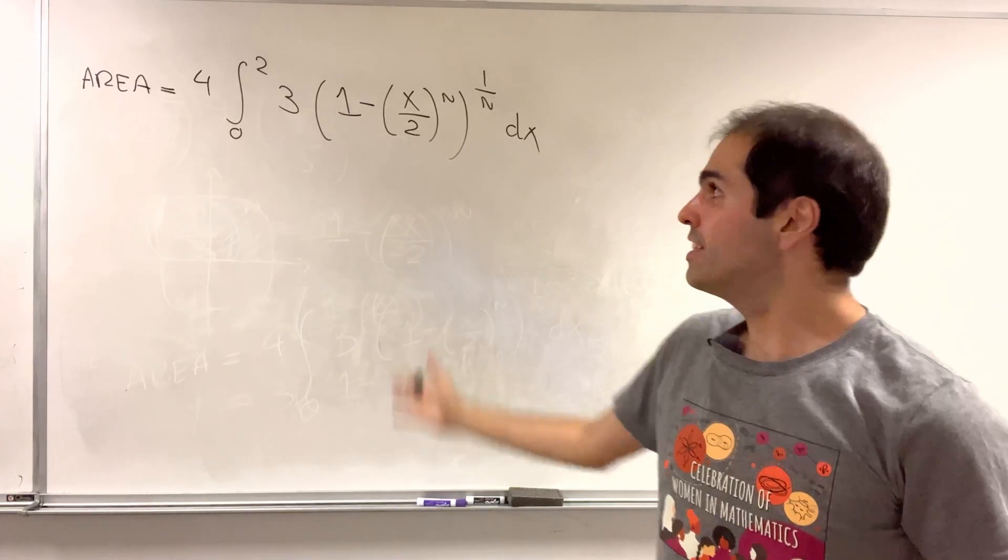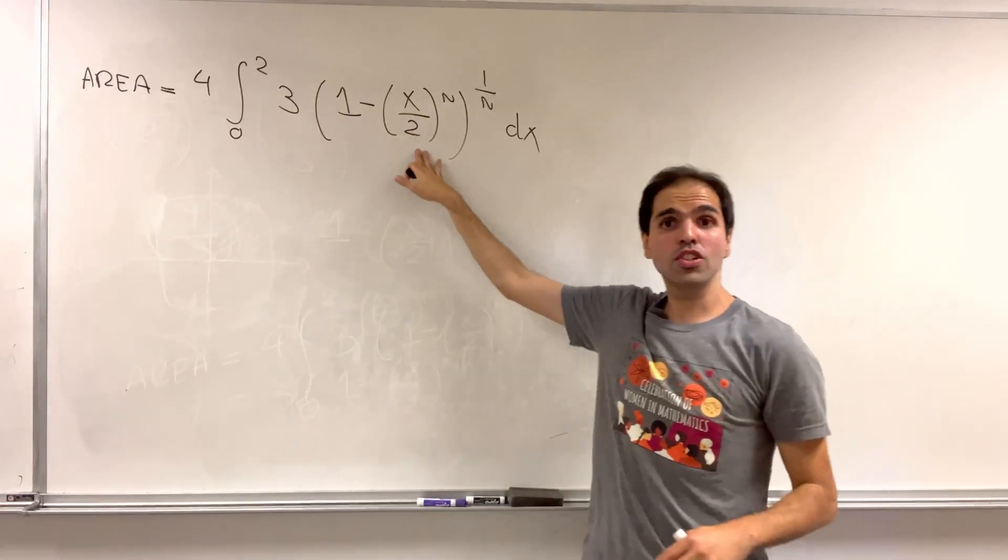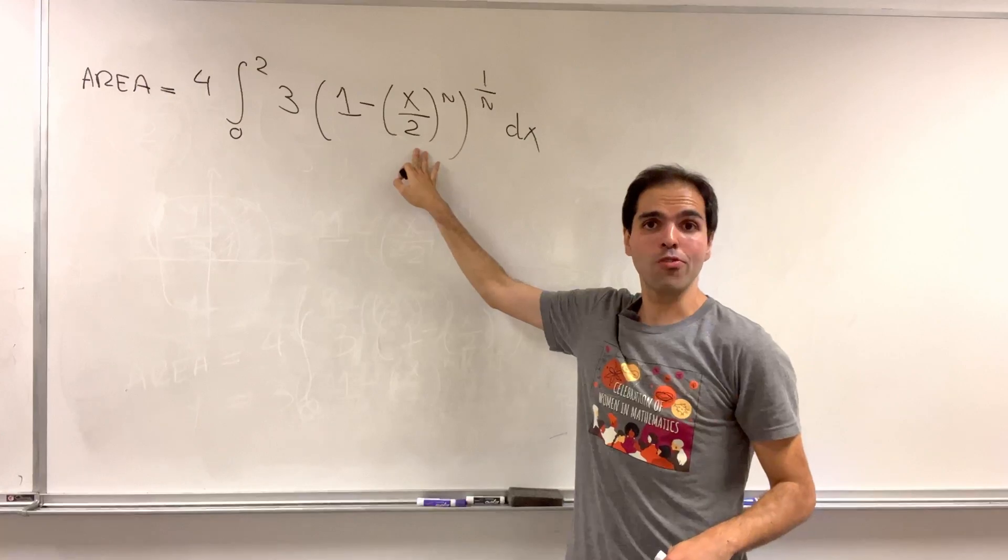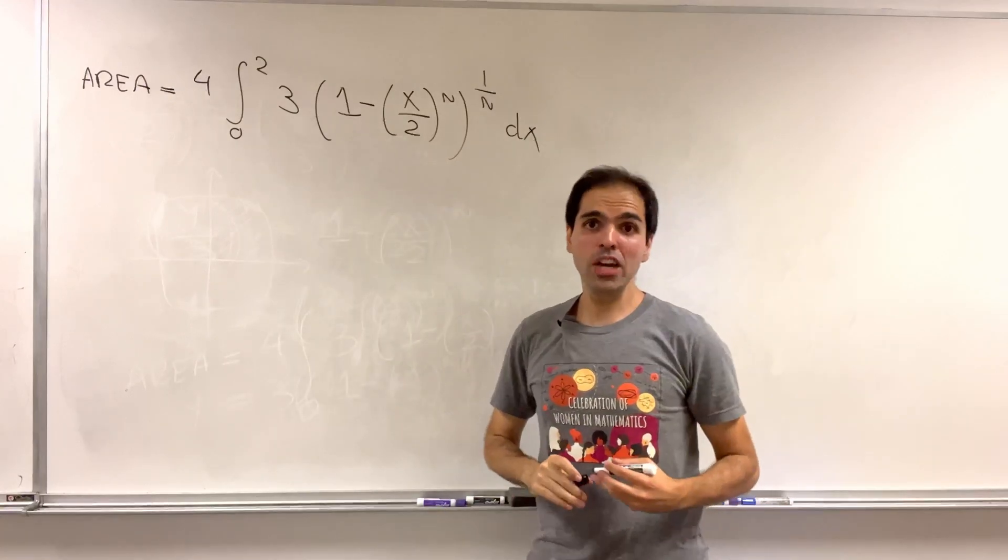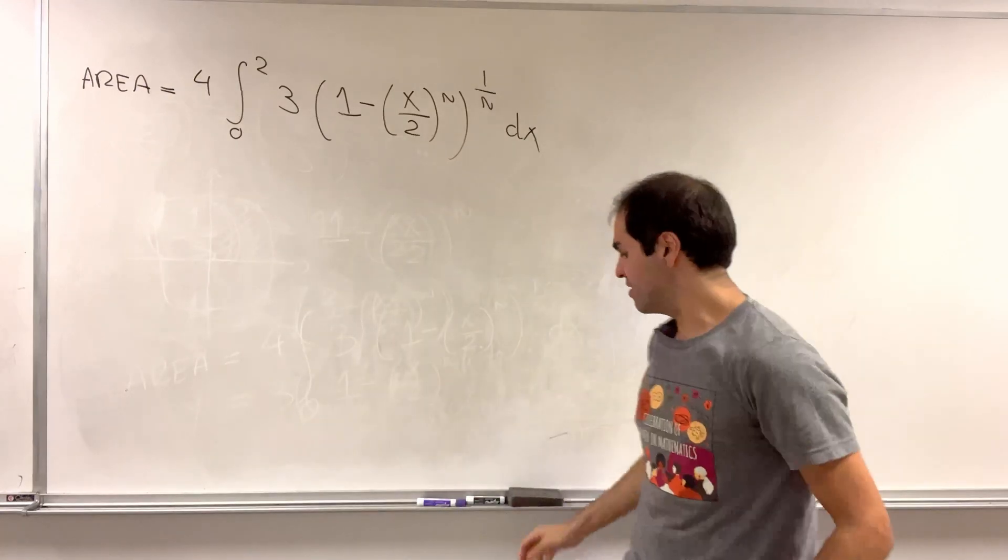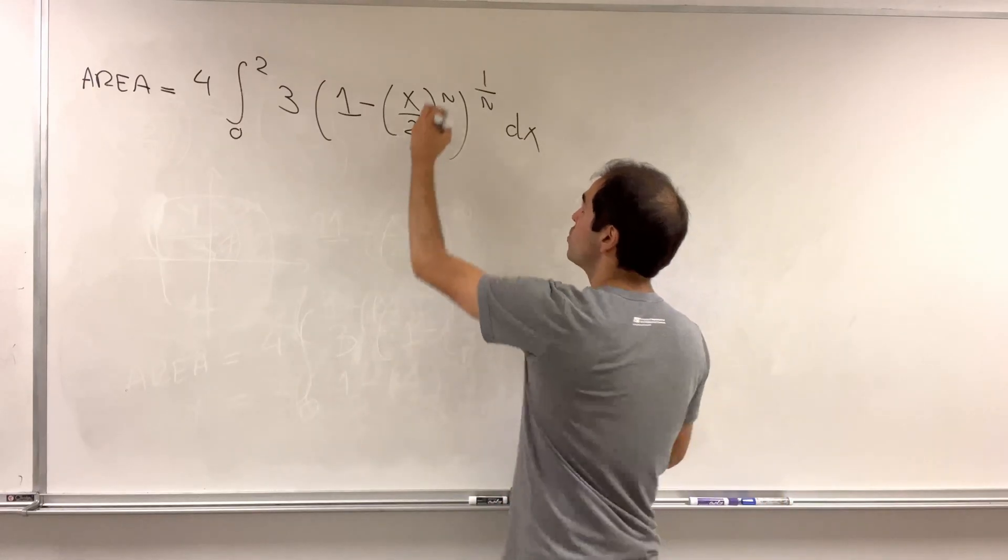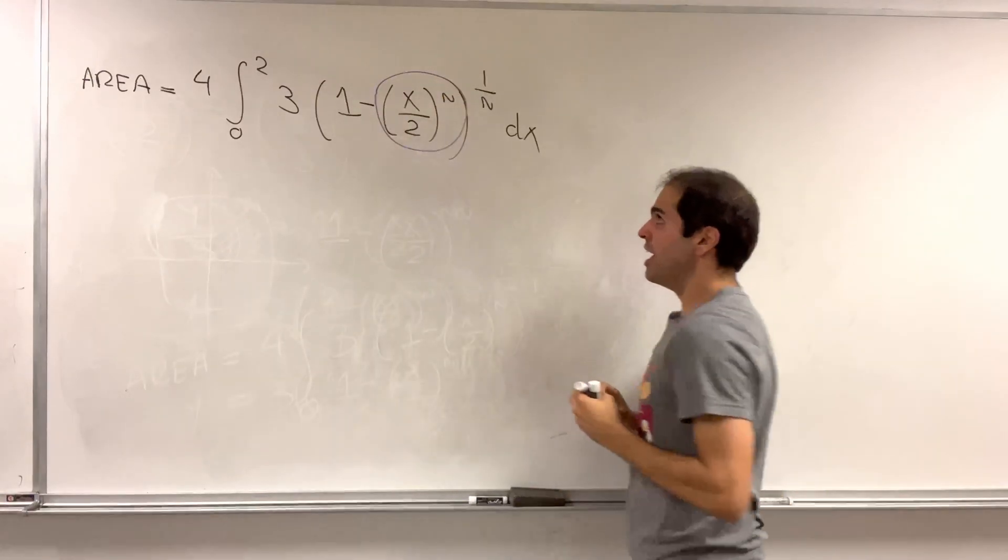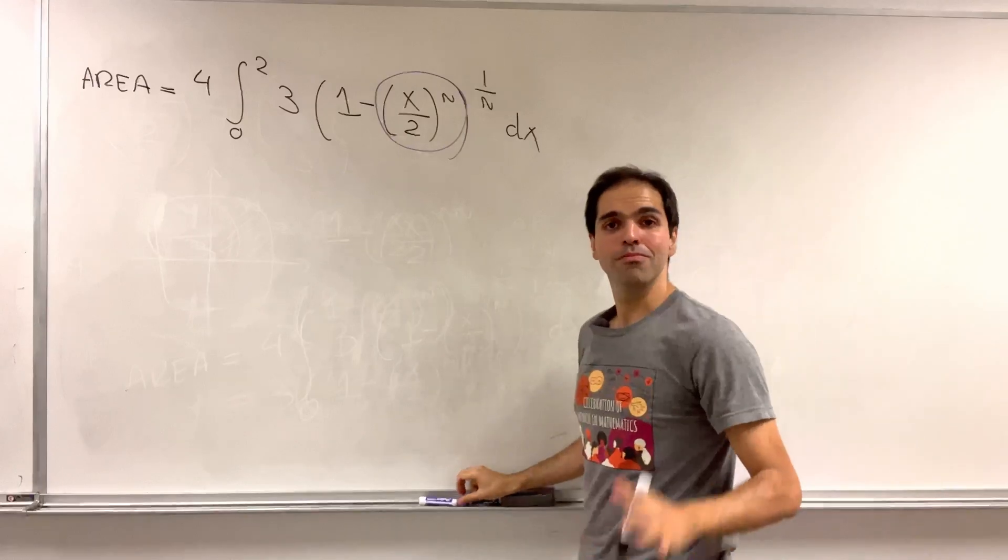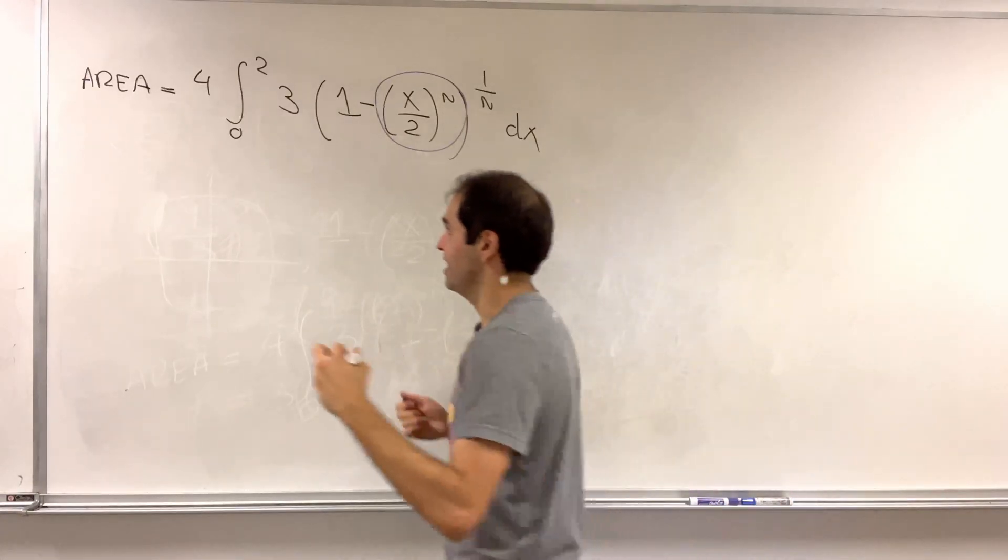In order to calculate that integral, you would think just to use a u sub x over 2, but no. Here we want to be a little bit more aggressive and we want to use the u sub u equals x over 2 to the n. And you'll see soon why we need this.